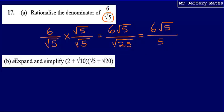Part B: we're asked to expand and simplify (2 + √10)(√5 + √20). What we've been asked to do here is expand and simplify double brackets.